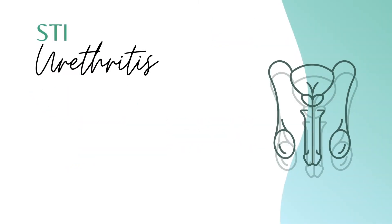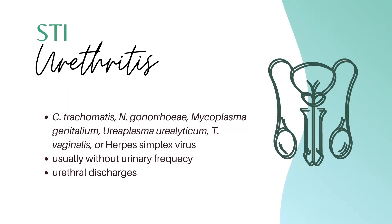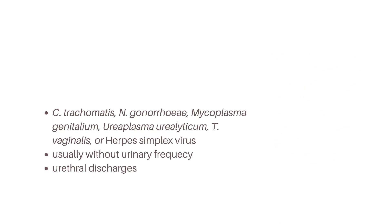STI urethritis is caused by either Chlamydia trachomatis, Neisseria gonorrhea, Mycoplasma genitalium, Ureaplasma urealyticum, Trichomonas vaginalis, or herpes simplex virus. It does not produce urinary frequency but has urethral discharges.